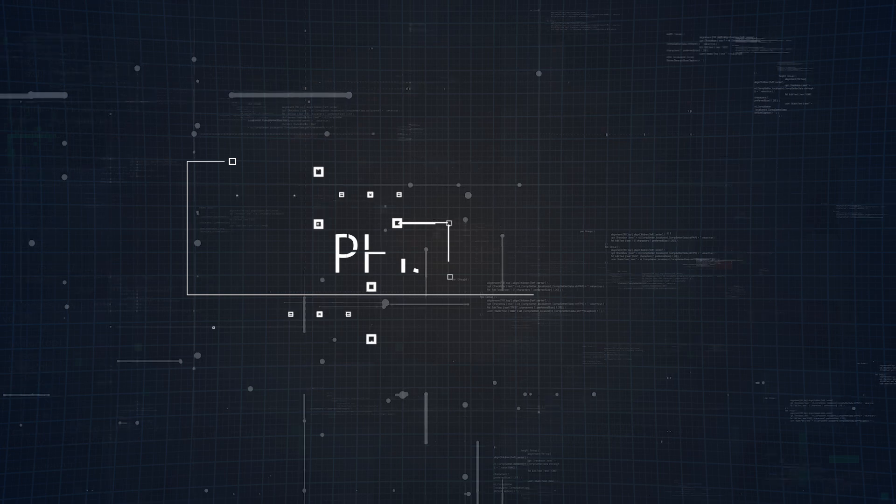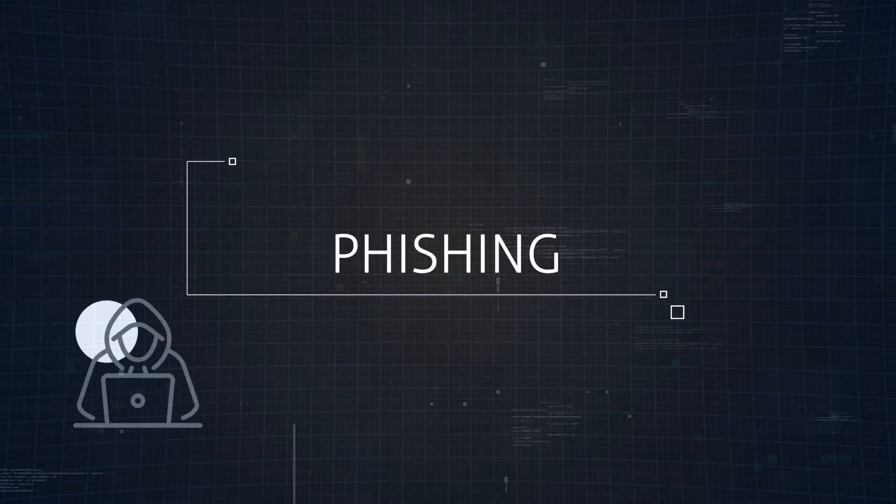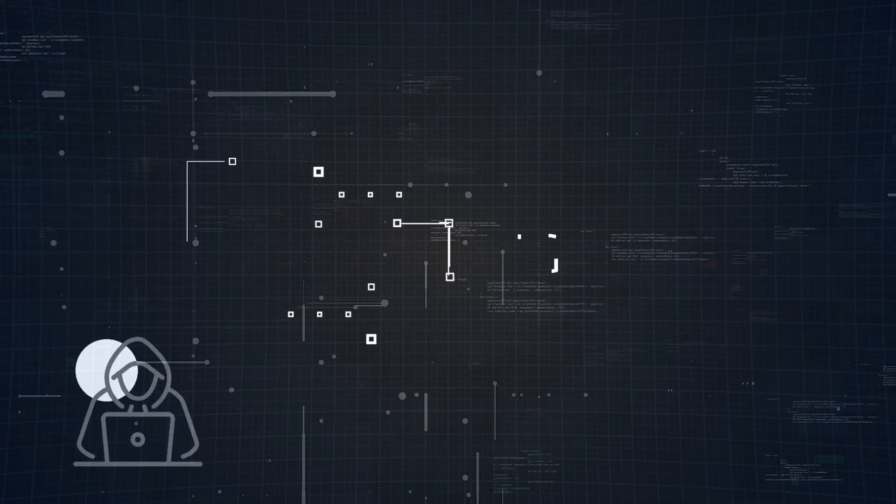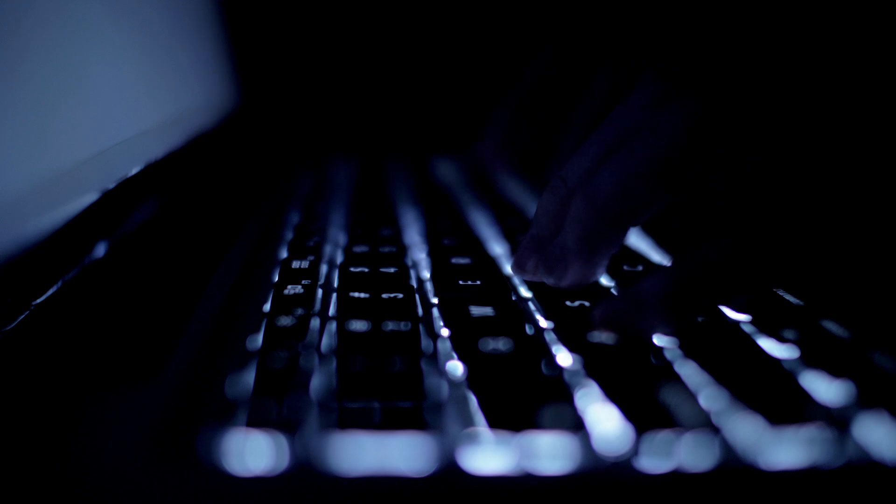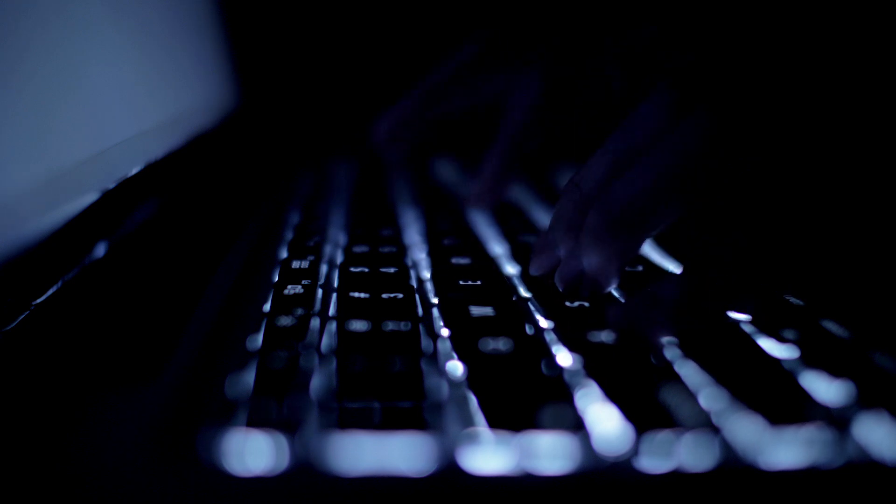First up, we have phishing. Phishing is one of the most common and dangerous cybersecurity threats out there. It's a type of social engineering attack where attackers trick you into providing sensitive information by pretending to be a trustworthy entity. Social engineering attacks really just boil down to manipulating people into breaking normal security procedures — it's more about exploiting human psychology rather than breaking into computer systems directly.